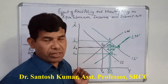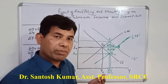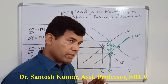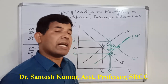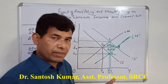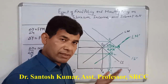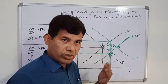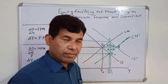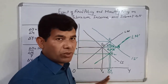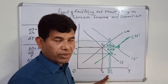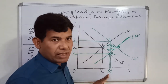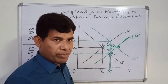When rate of interest falls, given investment being a function of rate of interest, investment rises. And when investment rises, through the multiplier, output rises, and you settle down at Y2 level of income. This is called the transmission mechanism of monetary policy.